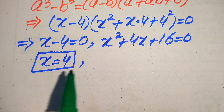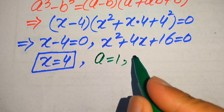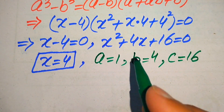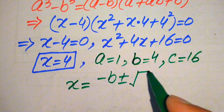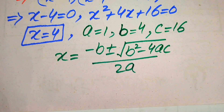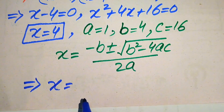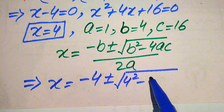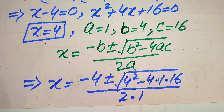We use the quadratic formula to find the roots. The coefficients of the equation are: a = 1, b = 4, and c = 16. The quadratic formula is x = (-b ± √(b² - 4ac)) / (2a). Substituting these values: x = (-4 ± √(4² - 4 × 1 × 16)) / (2 × 1).